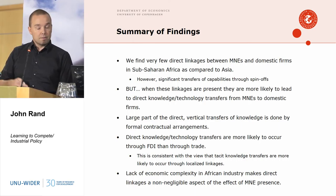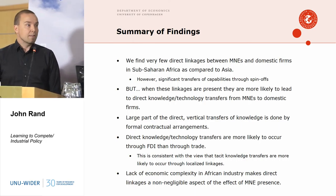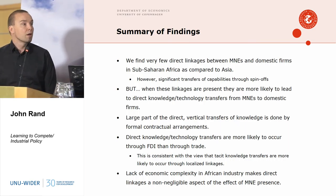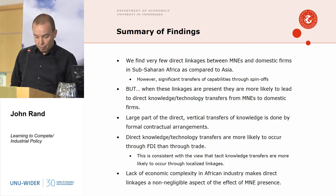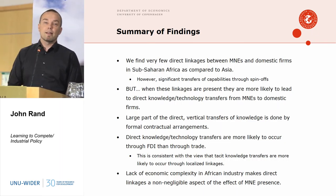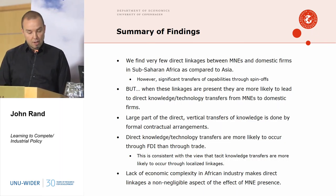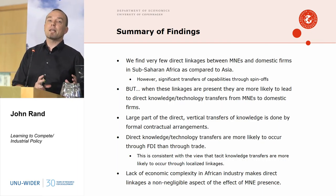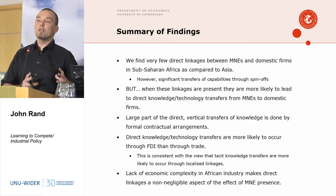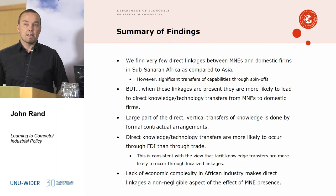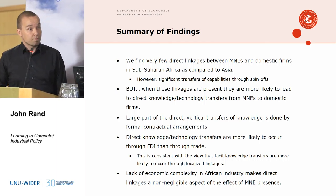Direct knowledge transfers are more likely to occur through FDI than trade, consistent with the view that tacit knowledge transfers require localized linkages. Linking to Hausmann and Hidalgo's work, the lack of economic complexity in African industry makes direct linkages a critical player — they cannot rely on indirect linkages as much as in Asia. We should not expect FDI to have similar effects in African settings as in Asian contexts; the mechanisms at play are different.